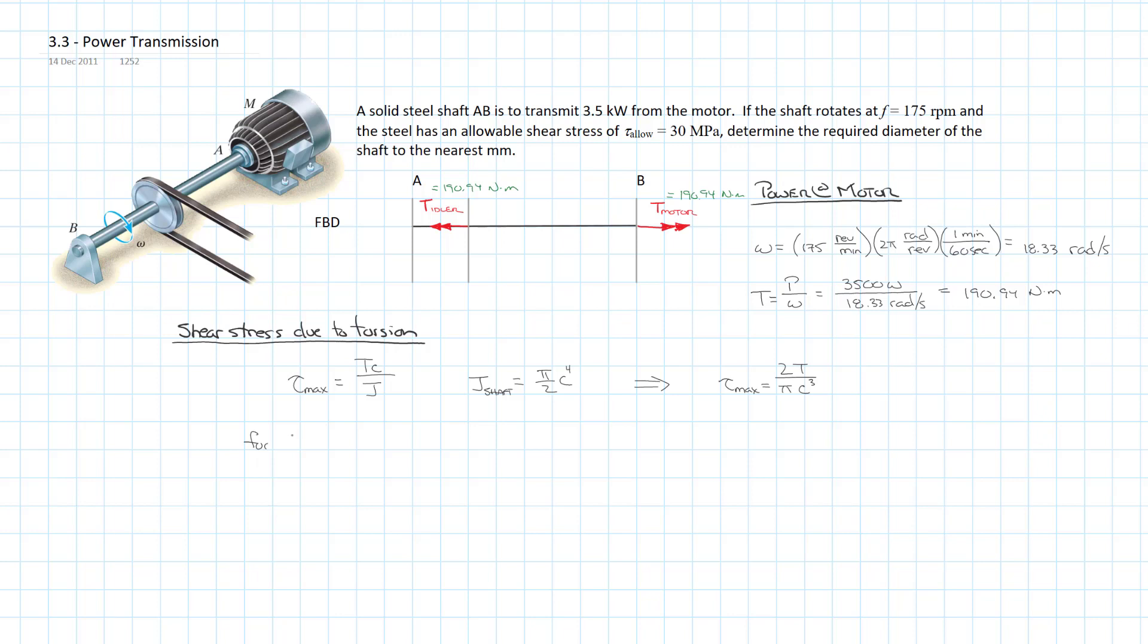If we want to set tau max equal to our tau allowable so we don't exceed it, we can rearrange this to get C equals the cube root of 2 times the torque divided by π times tau allowable.